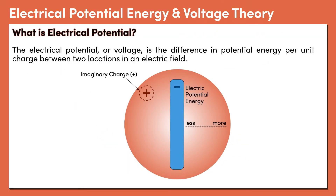What is electric potential? The electric potential, or voltage, is the difference in potential energy per unit charge between two locations in an electric field. With a negatively charged plate, a positively charged particle placed near it would have a little bit of electrical potential energy, and a particle placed further away would have more. So near the negative plate the electrical potential is low, and further from the negative plate the electrical potential is high.